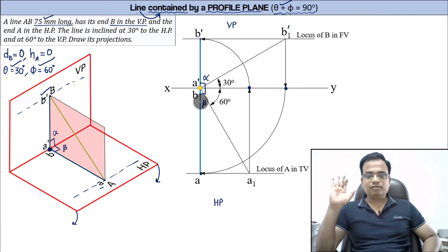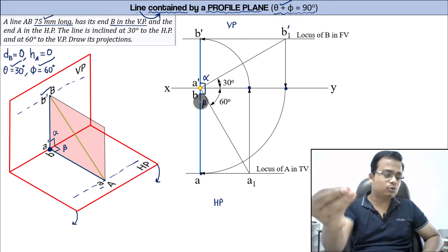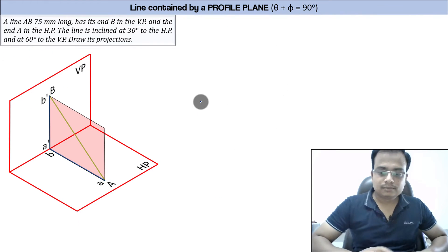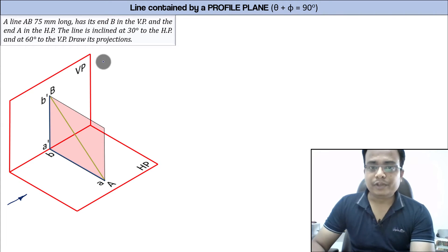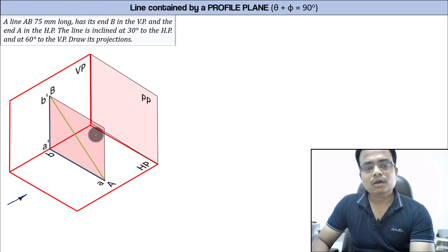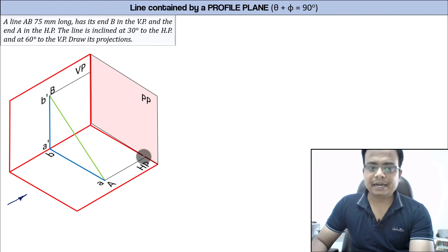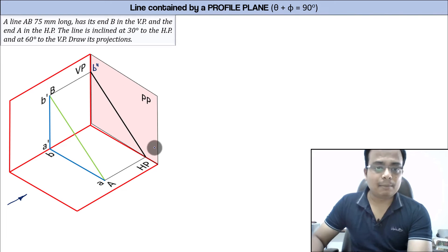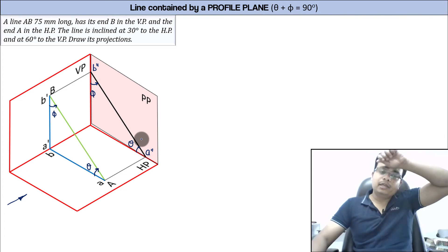There is one more approach: starting with the side view rather than the front or top view. To make the side view, we use the profile plane. In the side view, we use double-dash notation — so this is A-double-dash and this is B-double-dash. The angle made with the HP is theta and the angle with the VP is phi — both will be clearly visible in the side view. The true length of 75 mm will also be visible in the side view.